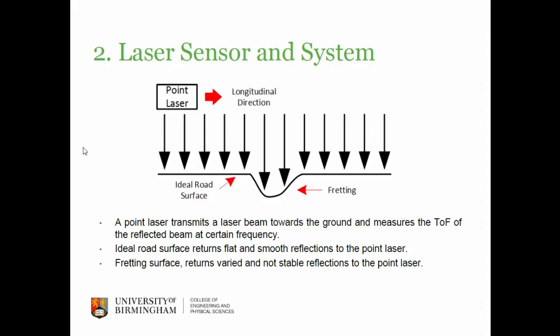The distance from the point laser to the ground will be very different compared to the ideal road surface. So if we can find out these differences, then we can decide which part of the road is good and which part is not good.